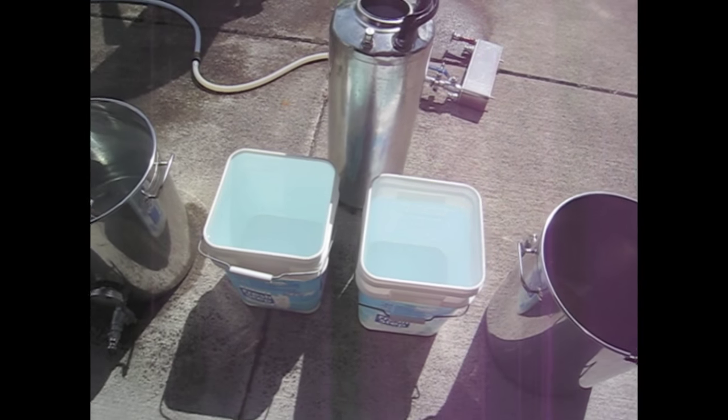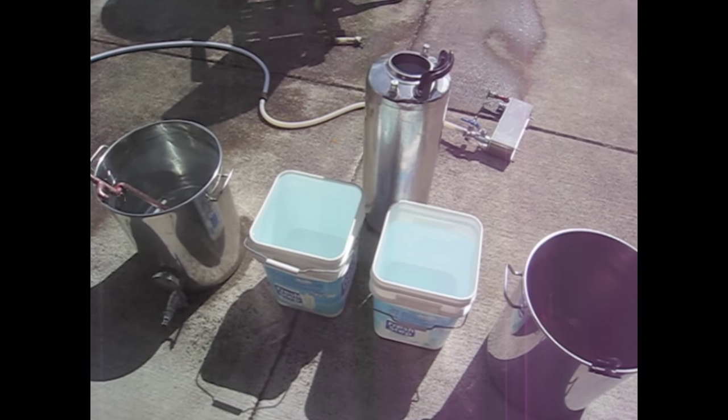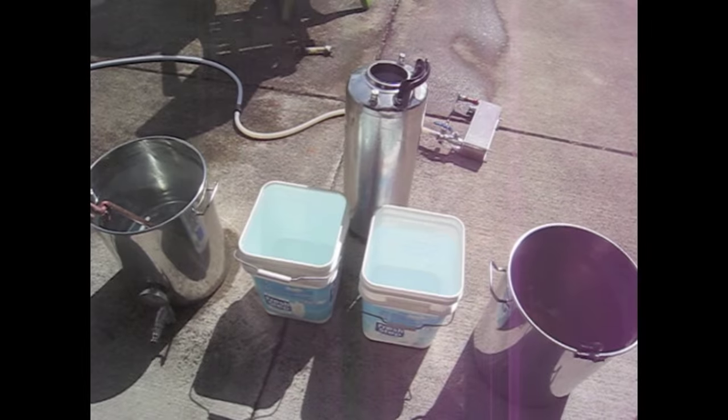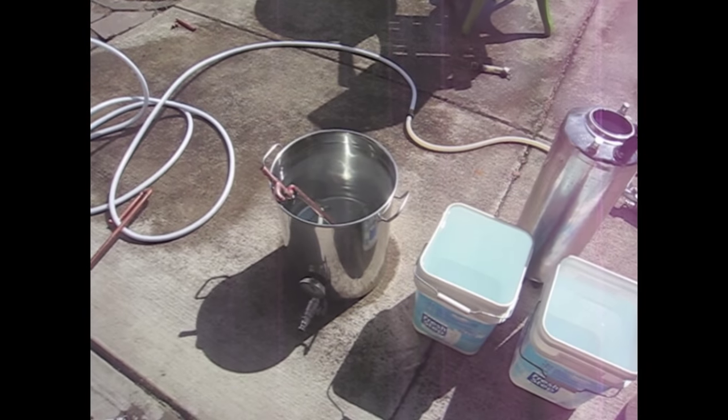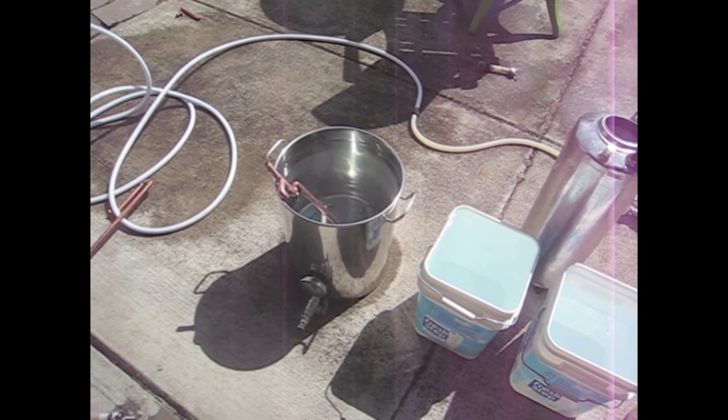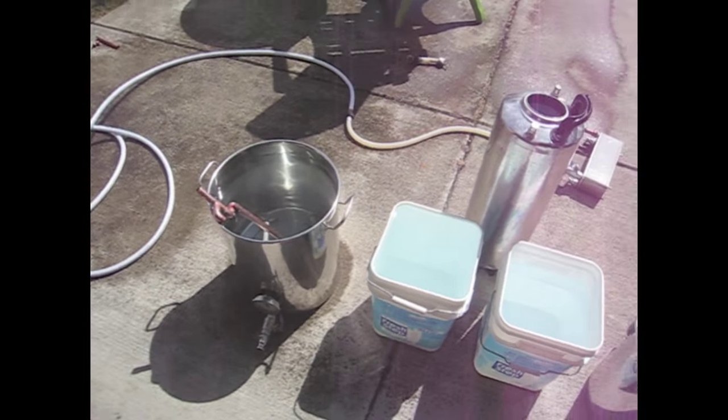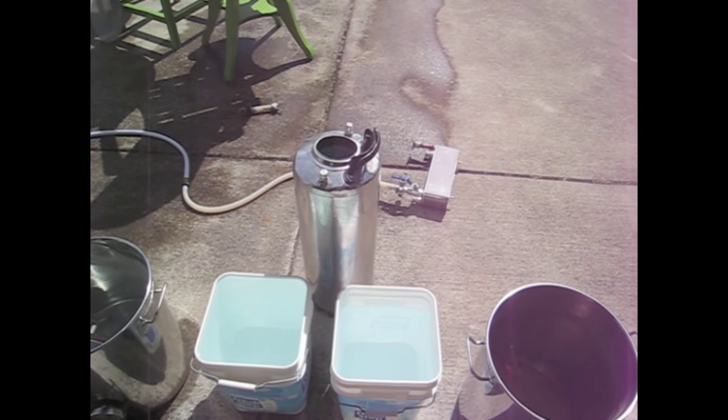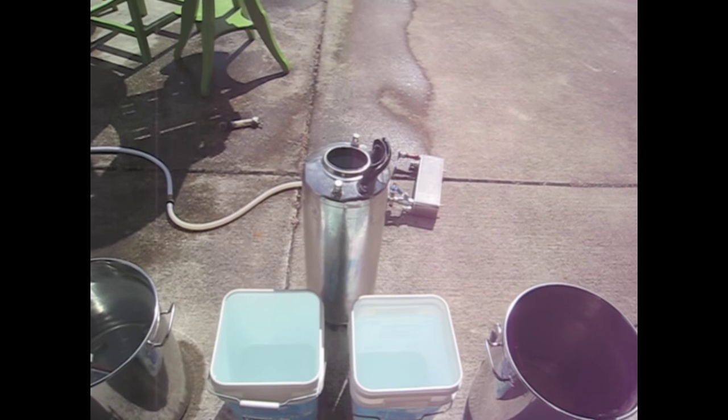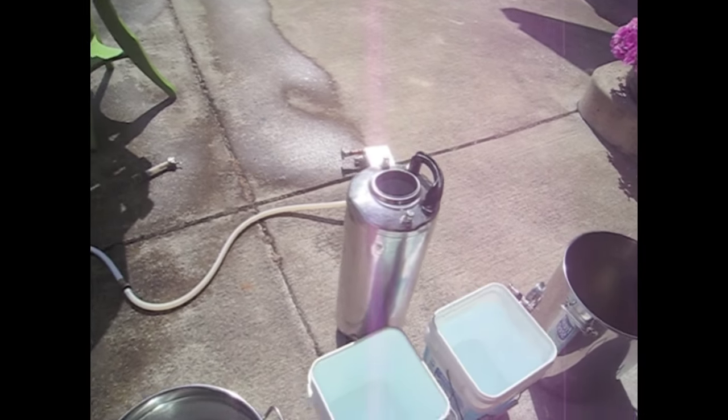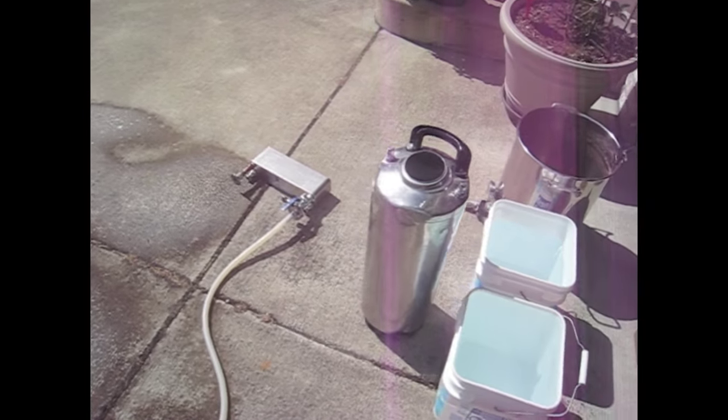As far as water use, the little tubs there are 3 gallons each. So 6 gallons there. Let's call it 7 gallons in the kettle. So that's 13 plus the 5 in the keg. 18 gallons of water used. All cooled in about, oh, 7 minutes I'll say.